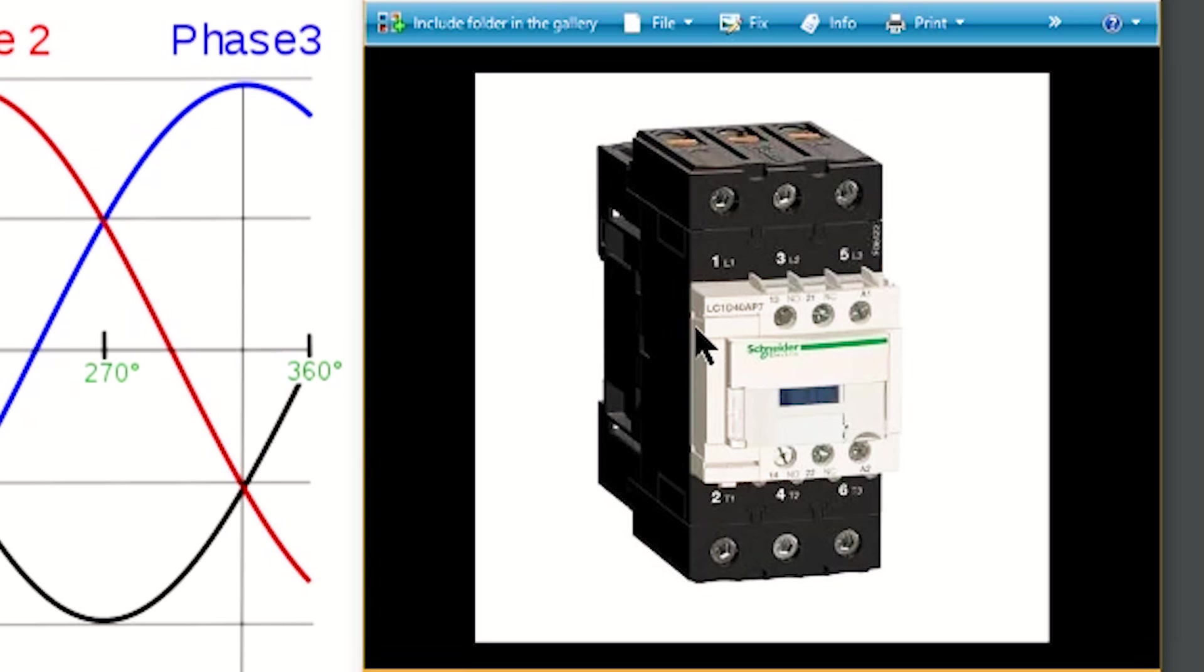Now the question comes up: what is an acceptable voltage drop across a contactor relay? It really depends on the voltage. I don't have an exact number for you, and I know you probably wish I did, but generally speaking, if you see anything approaching a volt, that's usually starting to become a problem.